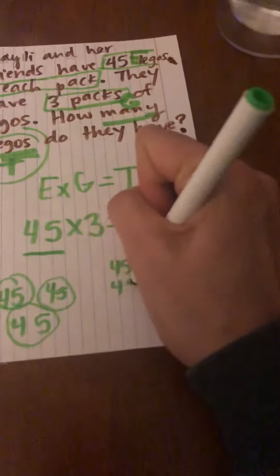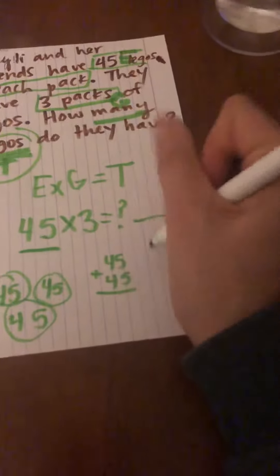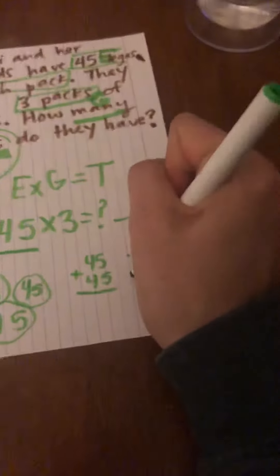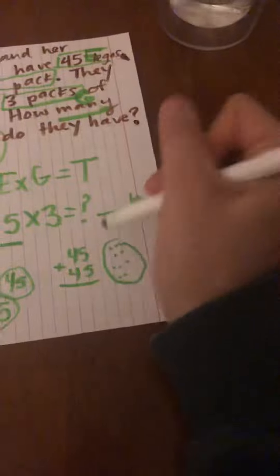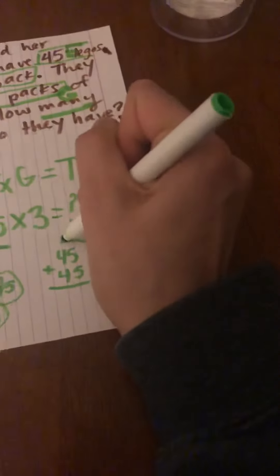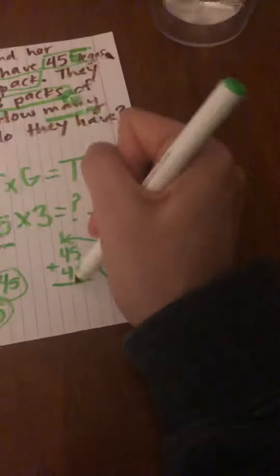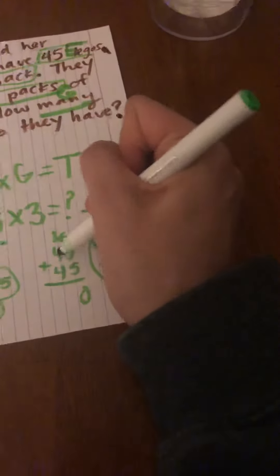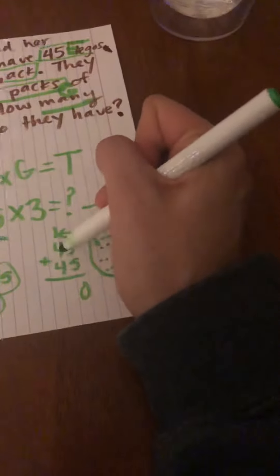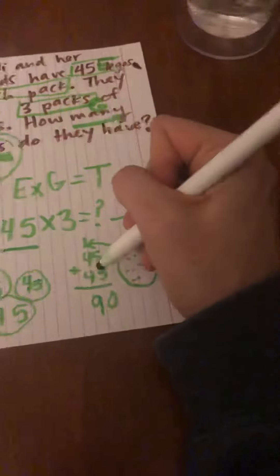45 plus 45. 5 plus 5 makes 10. If I have 10 ones, I can regroup them into a 10, and that'll go into the tens place. I have zero ones, but I have a 10 in the tens place. Four tens plus four tens plus one ten... four, five, six, seven, eight, nine tens. 45 plus 45 is 90.